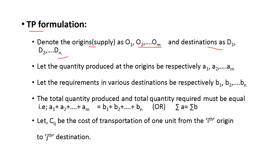The quantity produced at the origins is the supply, denoted A1, A2, ..., Am. The demand is denoted B1, B2, ..., BN. The total quantity produced and total quantity required must be equal — that is, sigma Ai should be equal to sigma Bj.